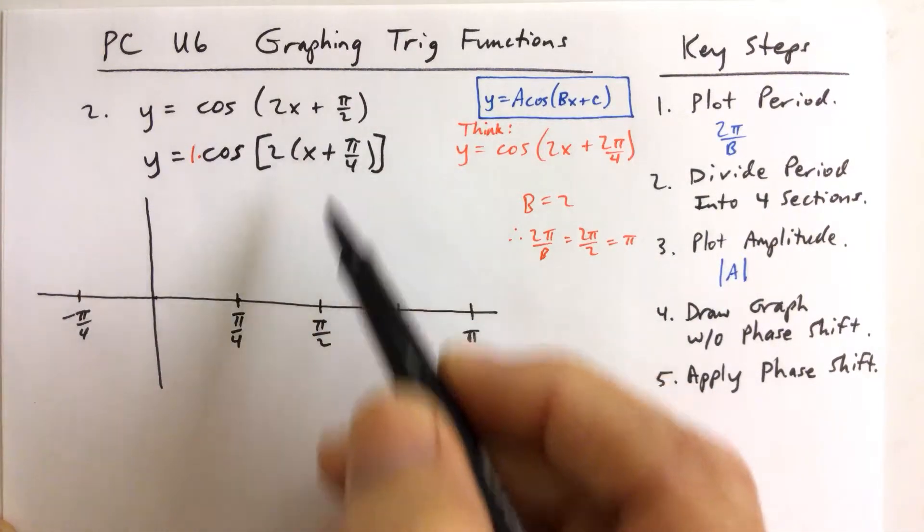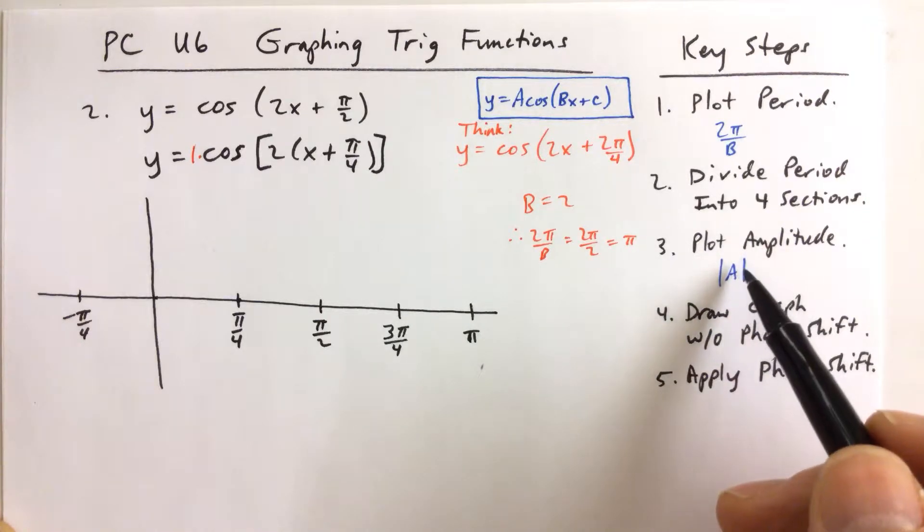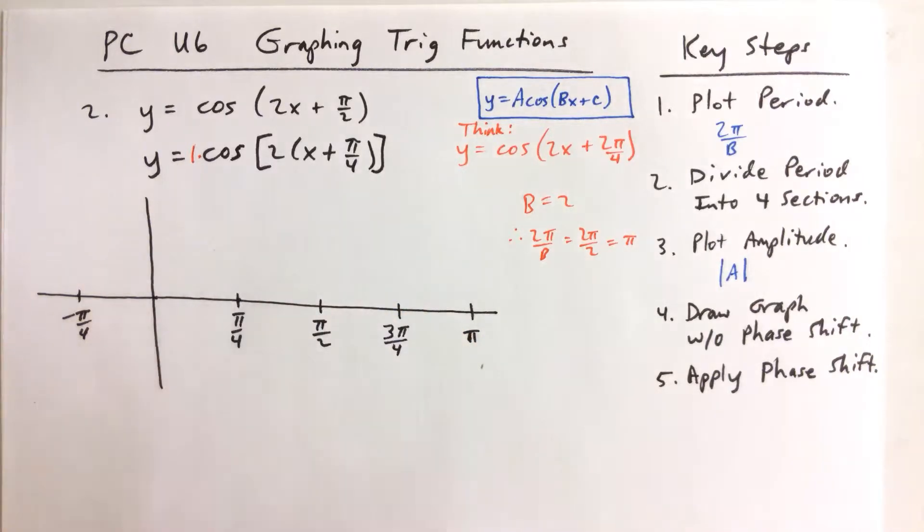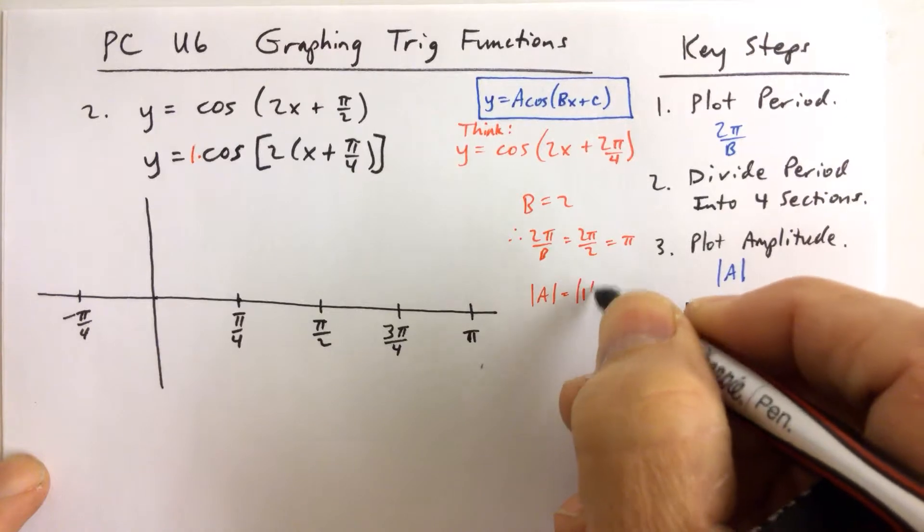I didn't need to do this part yet, but I'm just kind of looking in advance here. Plot the amplitude. The amplitude is the absolute value of a, and a happens to be 1.